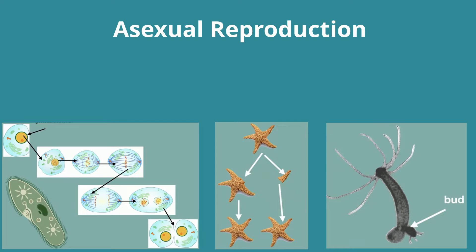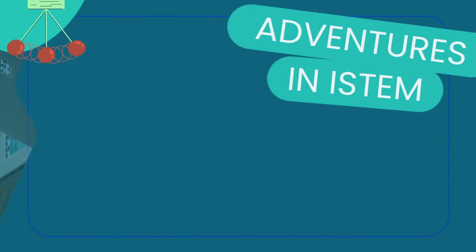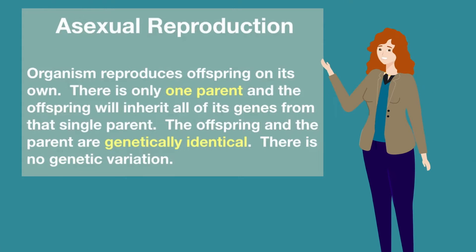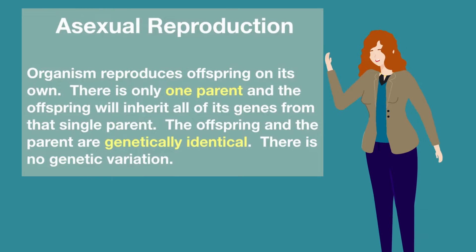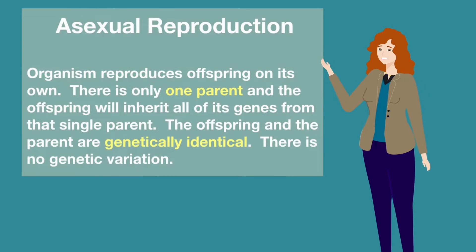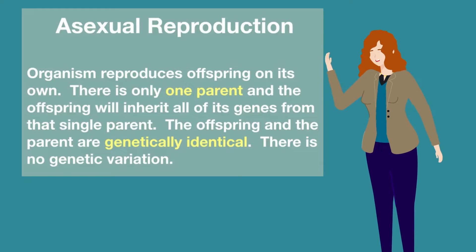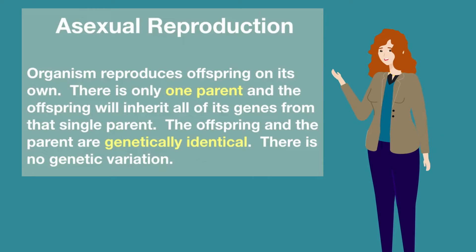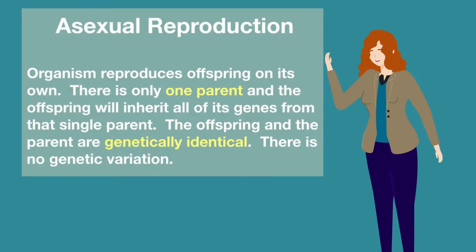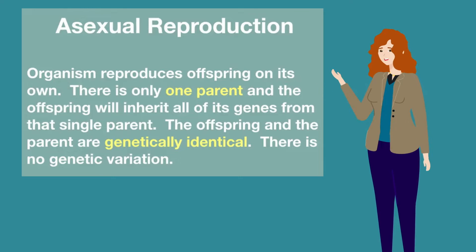Asexual Reproduction. In asexual reproduction, the organism reproduces offspring on its own. There's only one parent and the offspring will inherit all of its genes from that single parent. The offspring and the parent are genetically identical. There is no genetic variation.